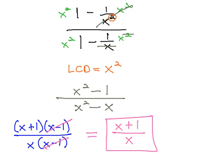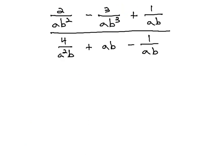Let's try a problem that has a little bit more involved denominator. This problem: 2 over ab squared, minus 3 over ab cubed, plus 1 over ab, all over 4 over a squared b, plus ab, minus 1 over ab. We can solve it in the very similar fashion, by first identifying the least common denominator.